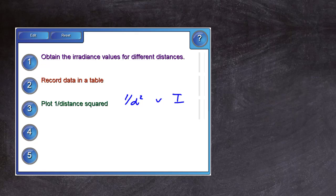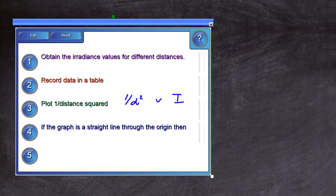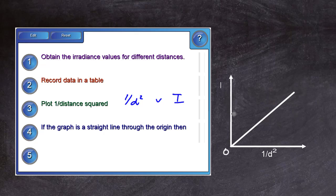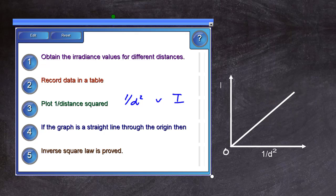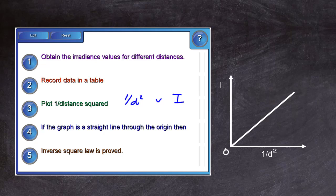Then what we do is if the graph is plotted and it's a straight line through the origin, then we can conclusively say that we have an inverse square law as proved. It must be a straight line and it must be through the origin before we can say that irradiance I is directly proportional to 1 upon d squared, which would be the inverse square law.